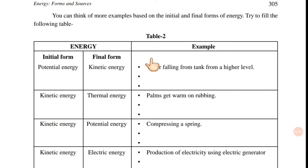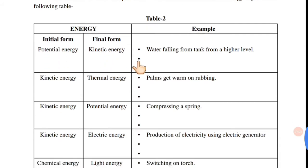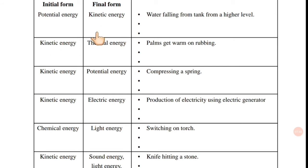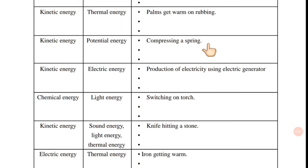Here are some examples of the initial forms and final forms of energy. In the initial form there is kinetic energy, then there is potential energy. For example, you can give water from a pump to a tank at a higher level — when it reaches the tank, there will be potential energy. In the same way, kinetic energy can change into thermal energy — for example, if we rub our palms together, kinetic energy converts into thermal energy.